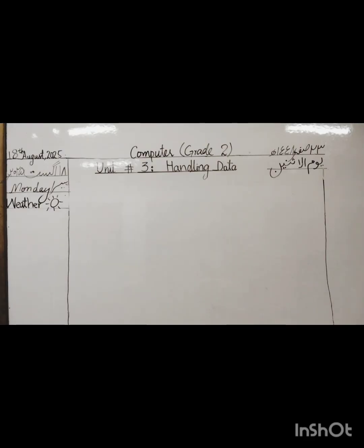Hasid, tell me: why do you use Edit Menu? Correct answer — Edit Menu is used to find or replace our text. Tanya, why do we use Format Menu? Good answer — the Format Menu is used to change the format and to wrap the text. Who can tell me why we use View Menu? View Menu is used to zoom in or zoom out. Why do we use Help Menu? Yes — Help Menu is used to access online help about Notepad.